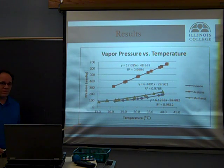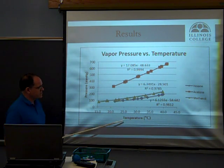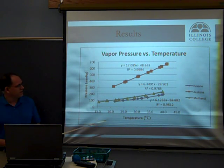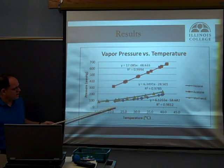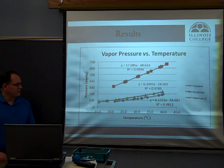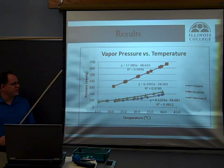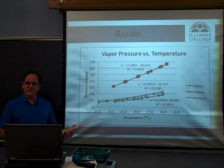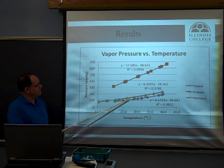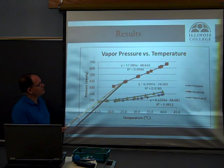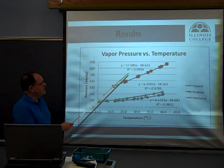Here are the results. Pressure is on the y-axis and temperature in degrees Celsius on the x-axis. Acetone is shown in red, methanol in green, and hexane in blue. Our results indicate that as temperature increases, vapor pressure goes up for all three volatile liquids. But not in the same way — these curves are not on top of each other and have different slopes. It appears all three curves fit a linear trend, so we fit a linear equation to each data set. The r-squared values are very close to one in each case, so our data is pretty linear.